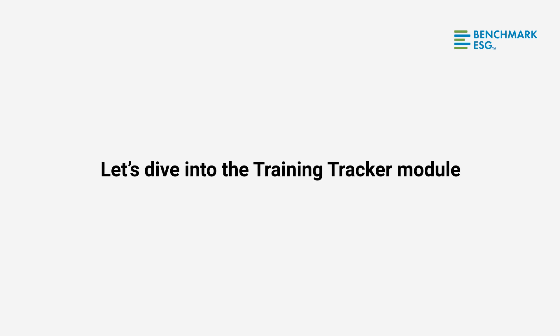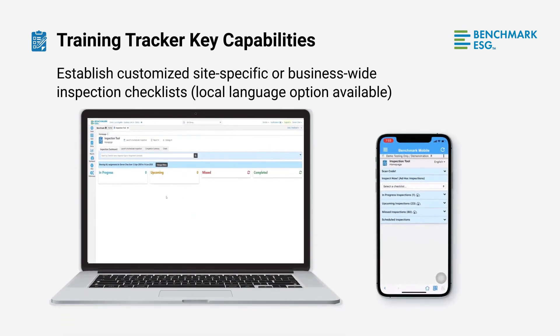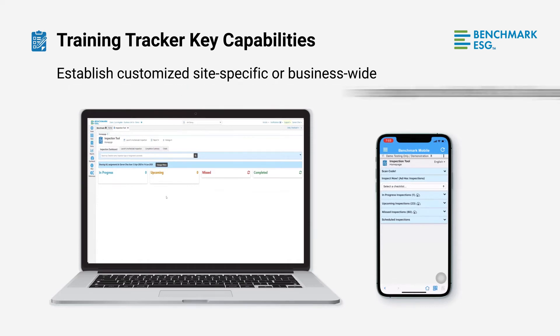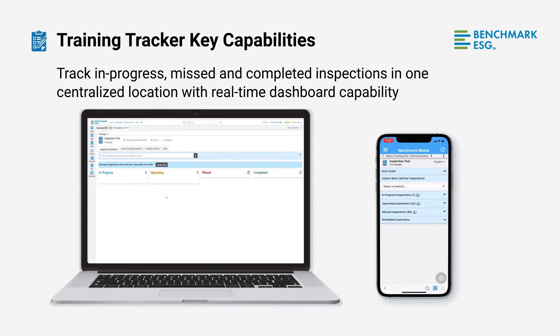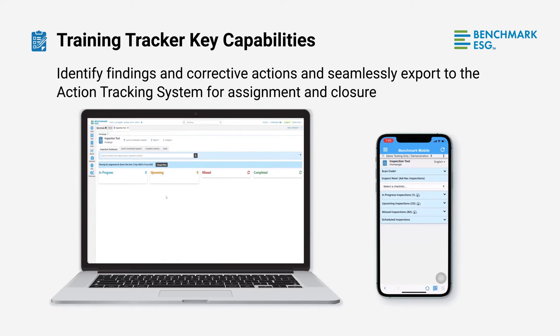Let's take a look at the inspection tool module to uncover why our subscribers use it and what it's capable of. Some key capabilities are: establish customized site-specific or business-wide inspection checklists — a local language option is also available; track in-progress, missed, and completed inspections in one centralized location with real-time dashboard capability; assign checklist completion responsibility and inspection frequency at various areas across the site; and identify findings and corrective actions and seamlessly export to the action tracking system for assignment and closure.